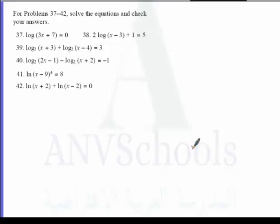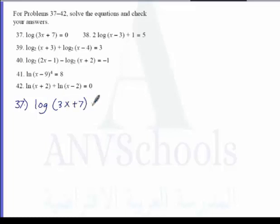We are still in problem sets for problems 37 to 42: solve the equations and check your answers. Let's start with number 37, which has the equation log of 3x plus 7 is equal to 0.